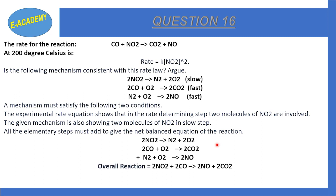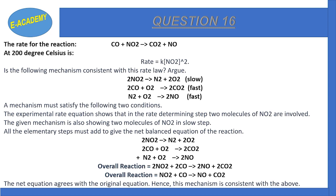Adding all elementary steps: 2NO₂ + 2CO → 2NO + 2CO₂. The net equation agrees with the original balanced equation, so this mechanism is consistent with the given rate law.